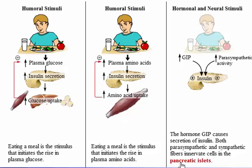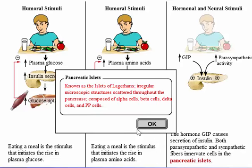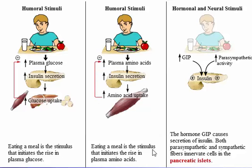Both parasympathetic and sympathetic fibers innervate cells in the pancreatic islets. Parasympathetic activity increases insulin secretion, and sympathetic activity, or the hormone epinephrine, decreases insulin secretion. Parasympathetic fibers become active in preparation for and during eating. Like the hormone GIP, this stimulus is also a feed-forward mechanism that causes an earlier and larger secretion of insulin than would occur if glucose were the only stimulus for secretion. Eating a meal is the ultimate stimulus for both of these feed-forward mechanisms.